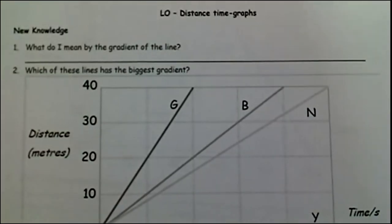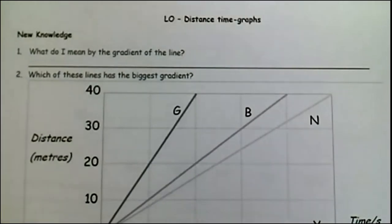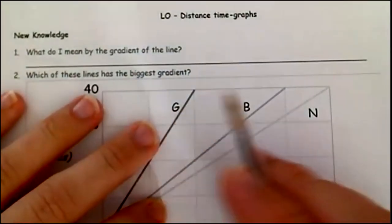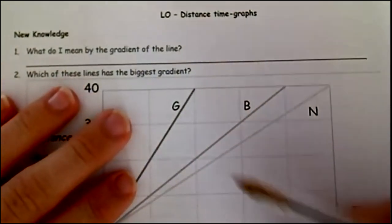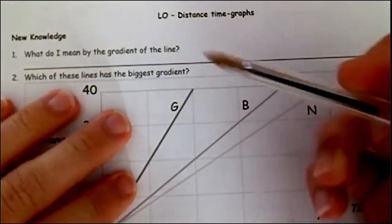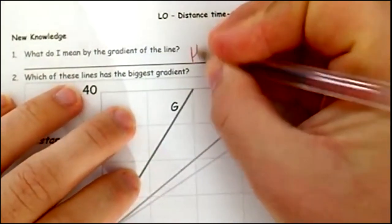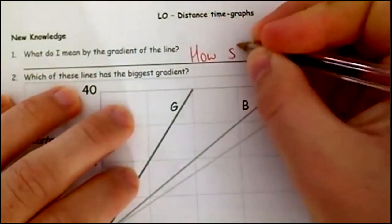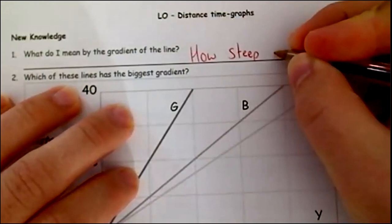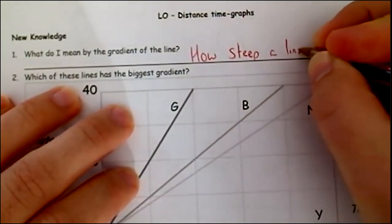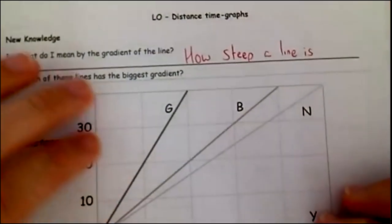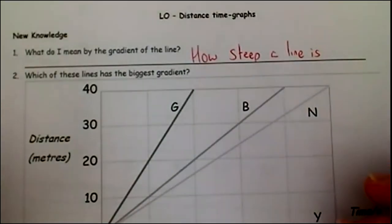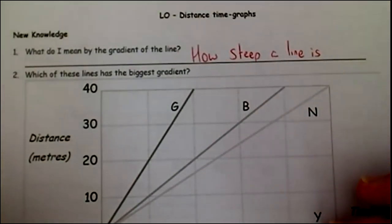A distance time graph is just a way of showing a journey. Whenever we talk about going on journey, we can actually visualize this with the graph. I'm going to start looking at the gradient, and then we'll come into what lines mean. When I talk about the gradient of a line, this is talking about how steep a line is. Whenever you mention a gradient, it means how steep a line is, and this is very important.